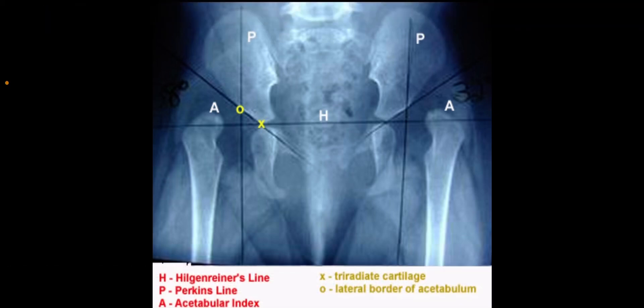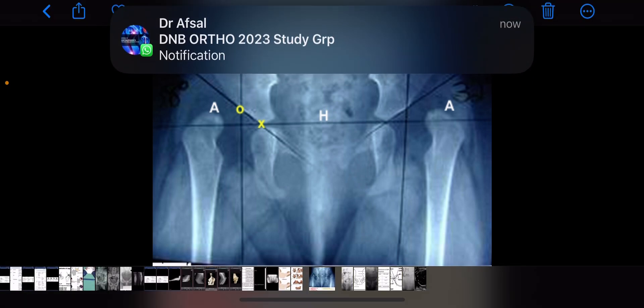Radiographic findings of DDH. Radiography: Hilgenreiner's line is a horizontal line through the right and left tri-radiate cartilage. Femoral head ossification should be inferior to this line.